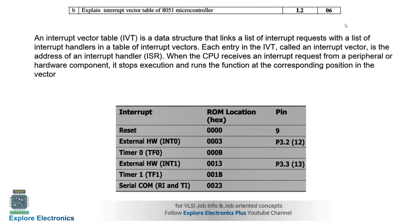The next question asks to explain the interrupt vector table for the 8051 microcontroller. The table shows different interrupts, their corresponding RAM address locations, and pin locations for external hardware interrupts — pin 3.2 and pin 3.3 correspond to INT0 and INT1. The interrupt vector table is a data structure that links interrupt requests to interrupt handlers in a table of vectors.